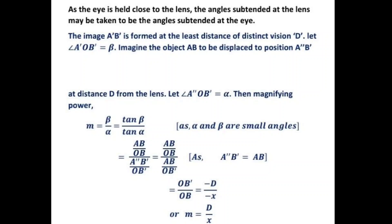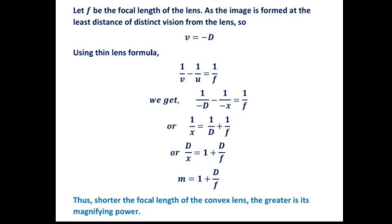We have the final expression m = D/x. Now we express the magnifying power in terms of focal length, because shorter the focal length of the convex lens, greater is its magnifying power. Let small f be the focal length of the lens. Since the image is formed at the least distance of distinct vision, we take v = −D using proper sign conventions. Using the lens formula 1/v − 1/u = 1/f, and substituting u = −x, we derive a relation for 1/x. Taking D as common, we get D/x = 1 + D/f.